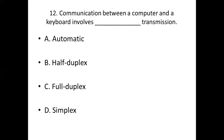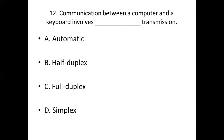Question 12: Communication between a computer and a keyboard involves dash transmission. Option A: automatic. Option B: half duplex. Option C: full duplex. Option D: simplex. Answer: Option D, simplex.